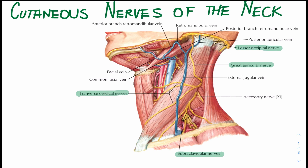Welcome to today's lesson on cutaneous nerves of the neck. The skin overlying the trapezius muscle on the back of the neck and on the back of the scalp as high as the vertex is supplied segmentally by posterior rami of cervical nerves 2 to 5. The greater occipital nerve is a branch of the posterior ramus of the second cervical nerve. The first cervical nerve has no cutaneous branch.